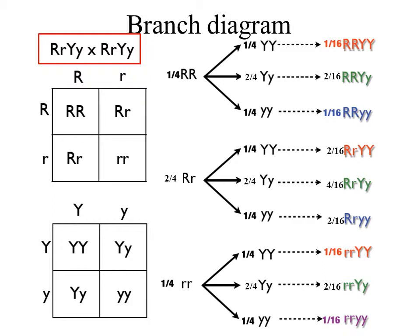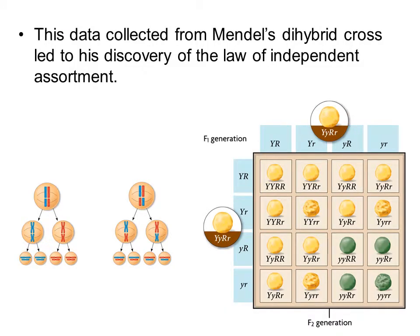The cross that he looked at using the Punnett square can also be worked out using what is called a branch diagram. The data collected from this dihybrid cross between two heterozygotes led to Mendel's discovery of the law of independent assortment.